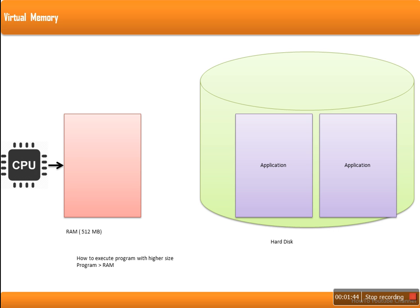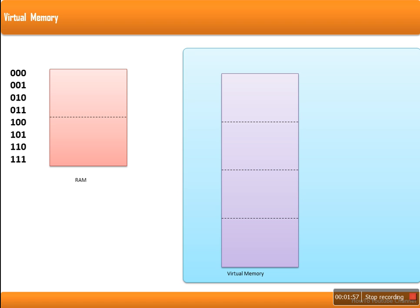So the problem is how to execute a program which needs higher memory than the capacity of the system. Here comes the role of virtual memory. Virtual memory — there is no such physical memory in the system. Virtual memory actually uses a hard disk to provide this service. In virtual memory, some space on the hard disk is allocated for virtual memory, and that space is used in such a way that it gives an illusion to the user that the memory available in the system is very high.